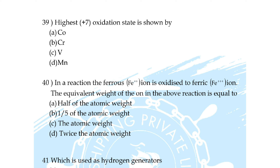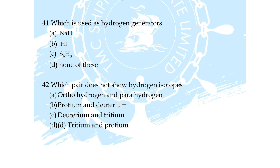Question number 39: highest oxidation state is shown by — option A: Co, B: Cr, C: V, option D: Mn. Correct answer is option D: Mn.